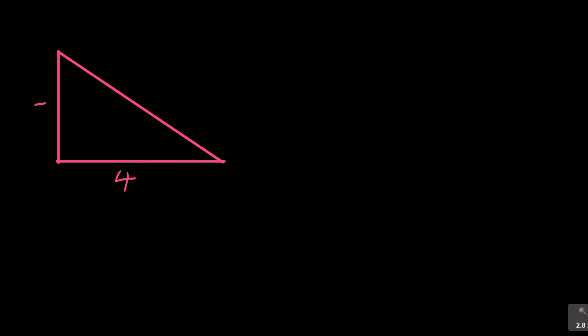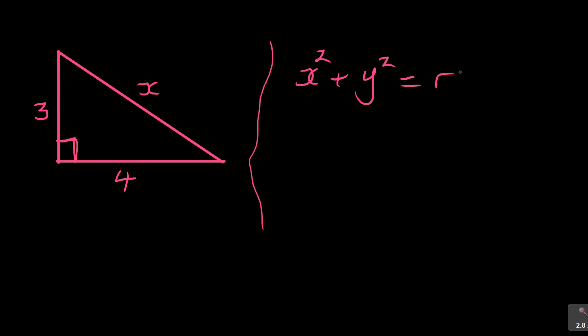Let's apply it. Sometimes we have special triangles. For example, if I'm given a right angle triangle where one side is 4 and another side is 3 — and remember, it must have 90 degrees — and they say find side X, then using the theorem of Pythagoras, the moment you have two sides, you write the formula: X squared plus Y squared is equal to R squared, then identify which values represent X, Y, and R.